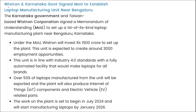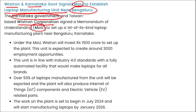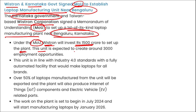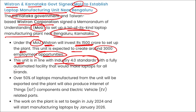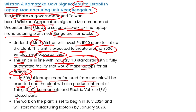Vistron Corporation and the Karnataka government signed an MOU to establish a laptop manufacturing unit near Bangalore. Taiwan-based Vistron Corporation will invest 1,500 crore rupees to set up this first-of-its-kind laptop manufacturing plant, expected to create around 3,000 employment opportunities. The fully automated facility aligns with Industry 4.0 standards, will make laptops for all brands, export over 50% of production, and also produce IoT components and EV-related parts.